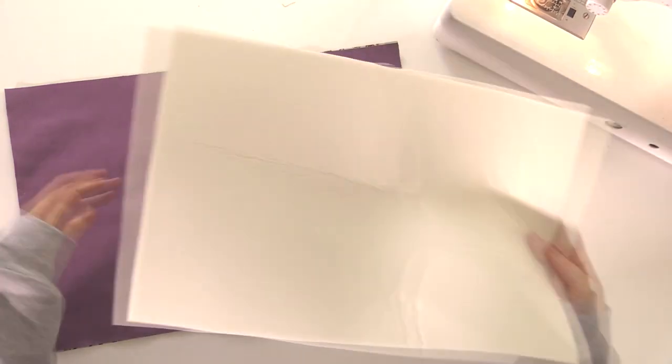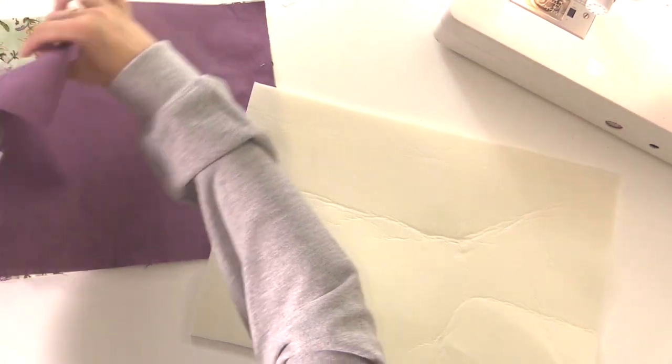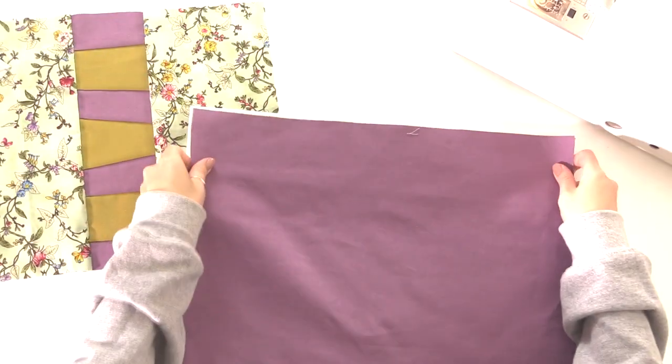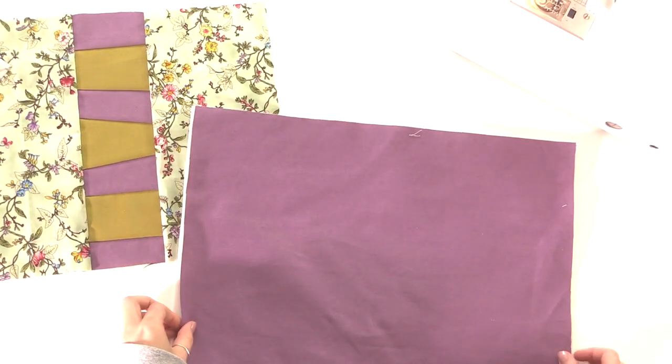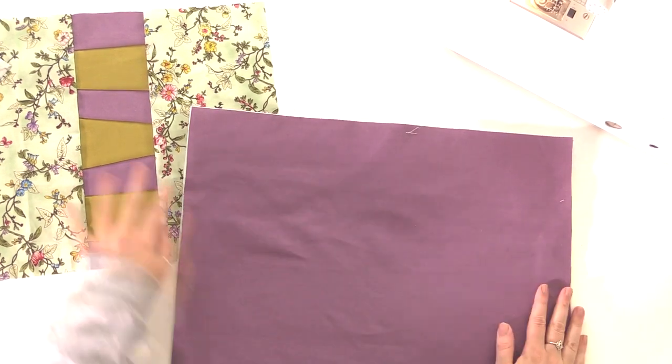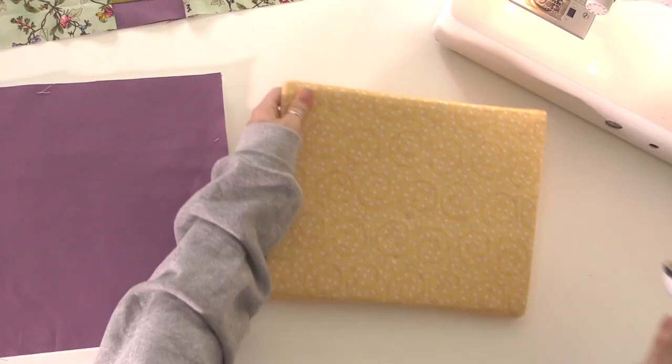You'll also need a piece of wadding that's the same size as the back. I'm using fusible interfacing for this. So I've just cut that to the same size as the back as well. And then you're going to want to fuse that onto the backing fabric if you're using fusible interfacing.